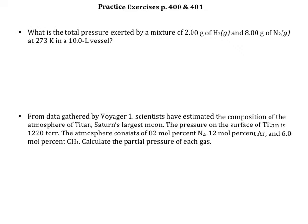These are practice exercises from pages 400 and 401 in the textbook dealing with partial pressures and mole fractions. On the first one, they want us to find the total pressure. They're telling us that we've got 2 grams of hydrogen gas and 8 grams of nitrogen gas, and then they're giving us some information about the conditions.